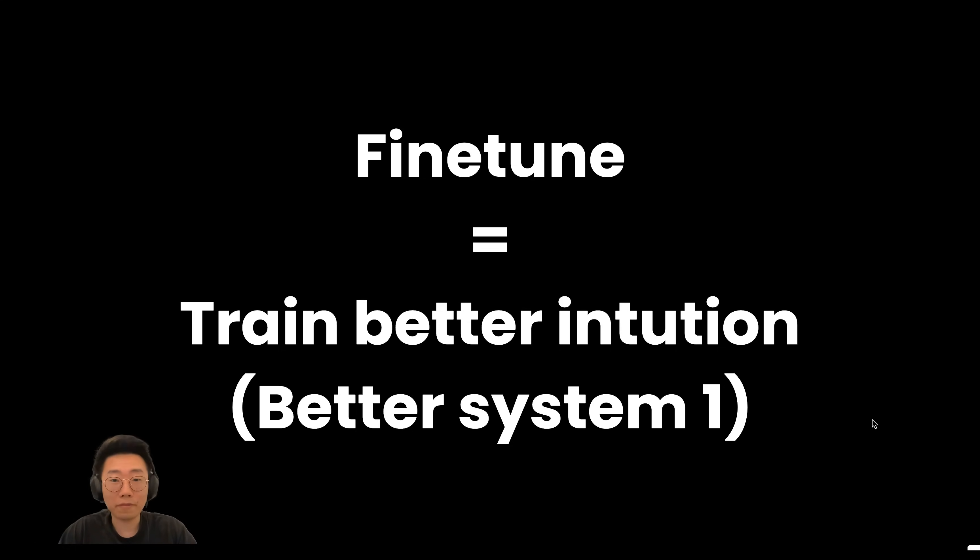And this is also why fine-tuning works. Because if all large language models have is system one intuitive thinking, then fine-tuning is basically training AI to get a much better intuition on a given subject. It's the same thing for humans. If you practice something for more than 10,000 hours, then you can actually solve a lot of system two level problems with just system one level intuition.